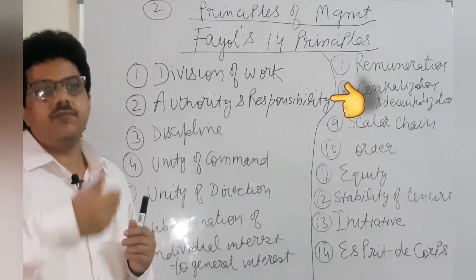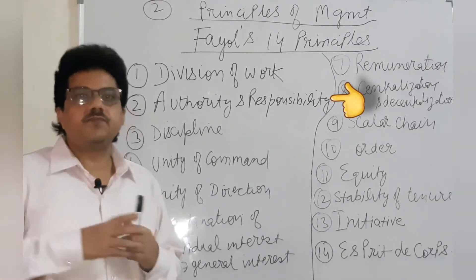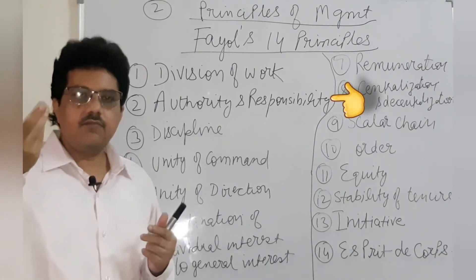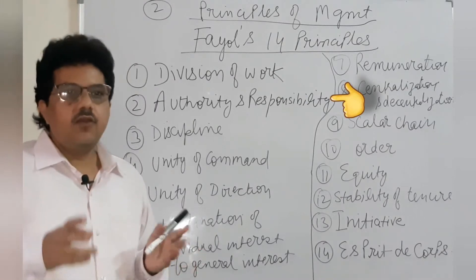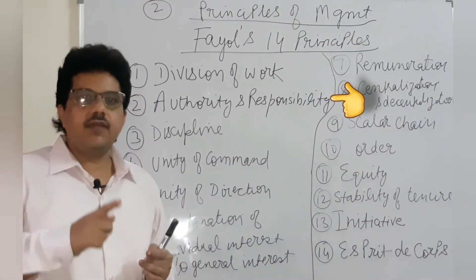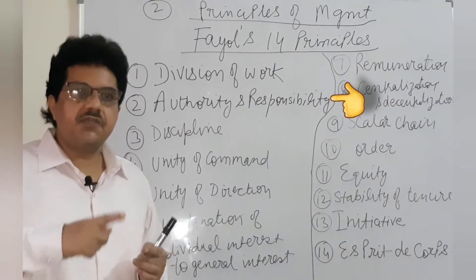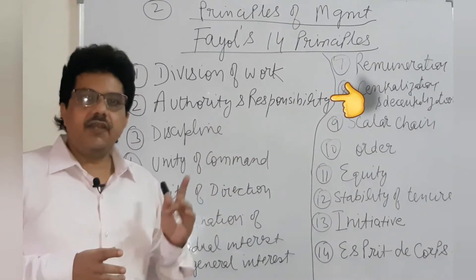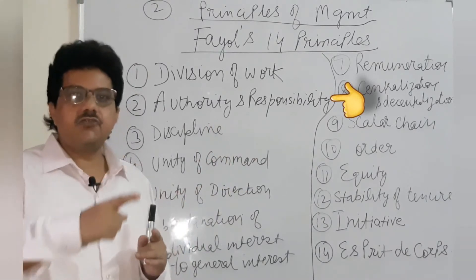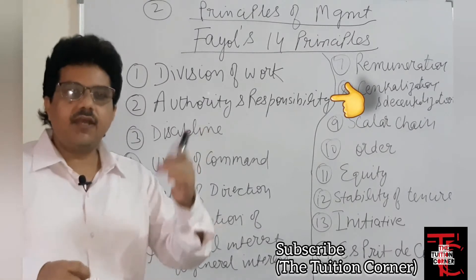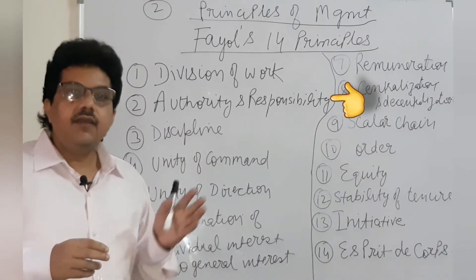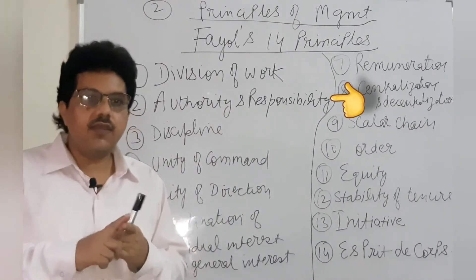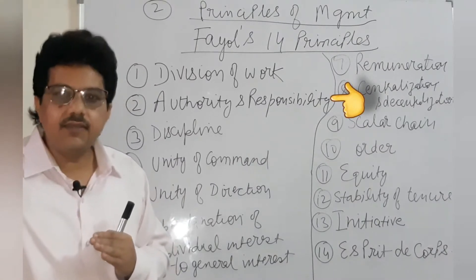For example, suppose you are the monitor of your class and your class teacher has said — let's say your name is Sanjay — you are the monitor, and you have to give me the names of the students who make noise. You can scold them, you can do anything with those who don't listen to you. So you have been given authority — authority means power. But it is possible that you are not following your responsibility. What is the responsibility? Along with the authority, certain duties have also been given.